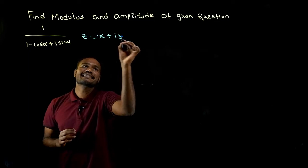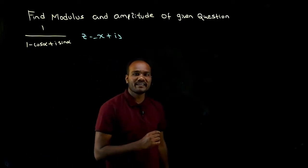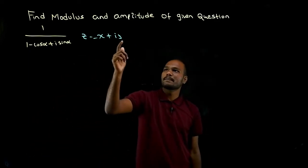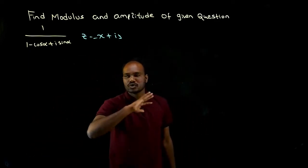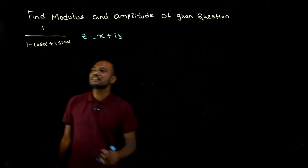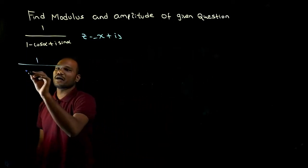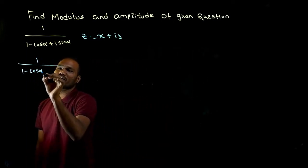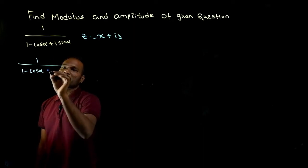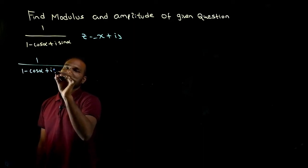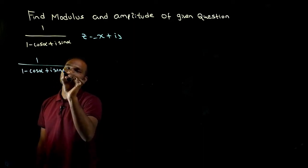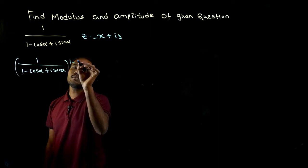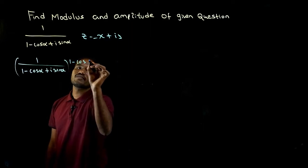The standard form is x plus iy. You always have to express it in the form of x plus iy. So let's consider how to convert this into x plus iy. We have one divided by one minus cos alpha plus i sine alpha, as given in the question. I will multiply this with the conjugate.